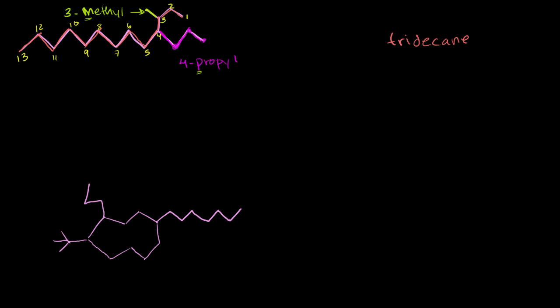So the entire compound here, or the entire molecule, is 3-methyl-4-propyl-tridecane. And this is actually all going to be one word. You use dashes to separate when you have numbers, but if you have a word followed by a word, it just becomes propyl-tridecane. So 3-methyl-4-propyl-tridecane. And we're done.